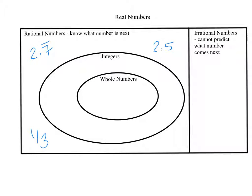Other rational numbers are whole numbers too. Just a 2 is rational. 0 is rational. Negative 5 is rational. We're going to talk about why I put them in green and move them in a little bit.